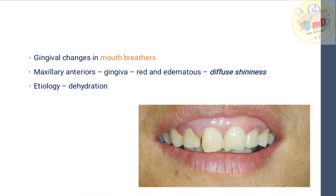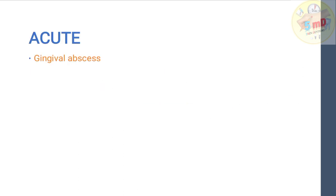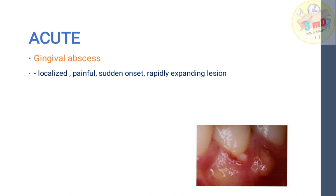Gingival change in mouth breathers is also a type of chronic inflammatory enlargement. It is seen in maxillary anteriors usually. The gingiva is red and edematous and shows diffuse shininess because of dryness. The etiology is mostly dehydration. Acute gingival enlargement is usually a gingival abscess — it is localized, painful, sudden in onset, and rapidly expanding.